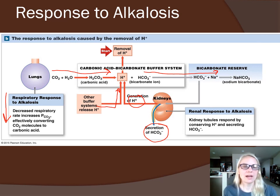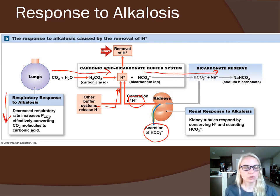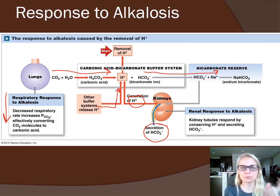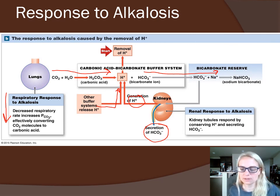So that is our compensatory mechanisms — how does your respiratory system change by increasing or decreasing rate, and how do your kidneys change whether they are reabsorbing or secreting hydrogen ions or bicarb to maintain your blood pH? I have one more video to summarize the whole thing and wrap up different kinds of pH imbalances, acidosis and alkalosis. I will see you then.